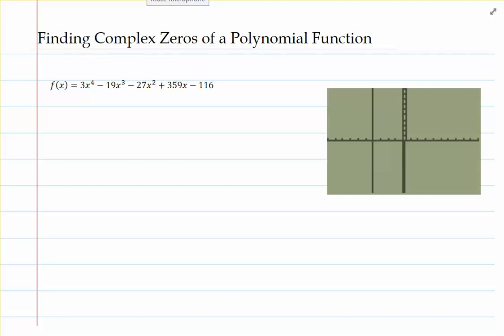All right, algebraos, roll your sleeves up. It's going to be a street battle in this example because in this one, we are finding the complex zeros of a polynomial function. And we also have a fourth-degree polynomial to boot.